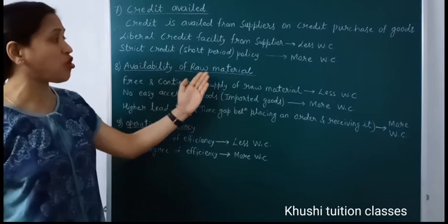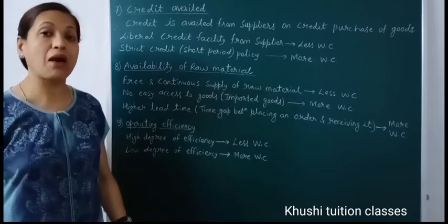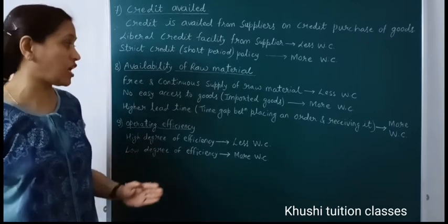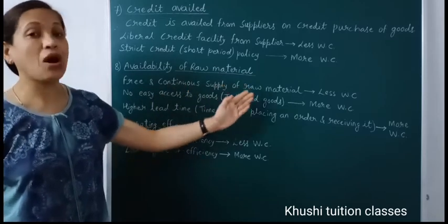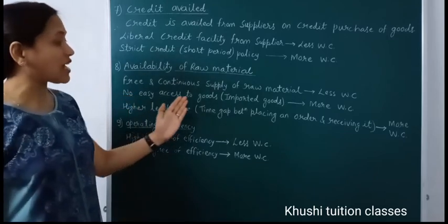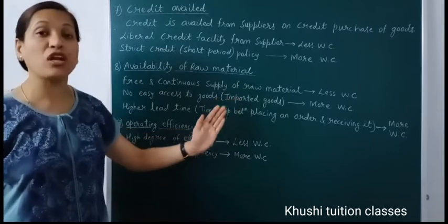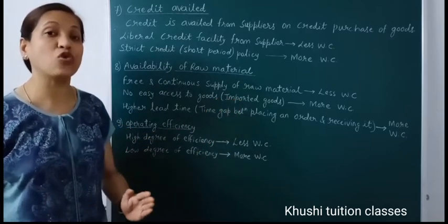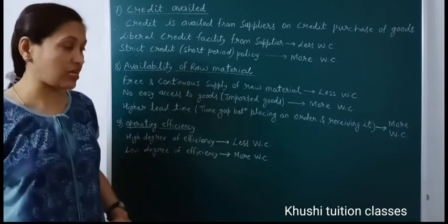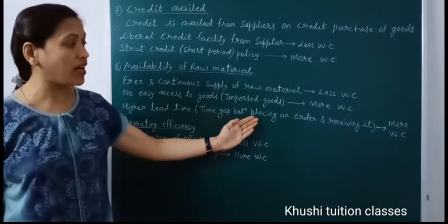The eighth factor is availability of raw material. If there is no easy access to goods — like in the case of imported goods — then we need more working capital, because our investment is being blocked by holding larger closing stock. Higher lead time — meaning the time gap between placing an order and receiving it — also increases working capital requirements.